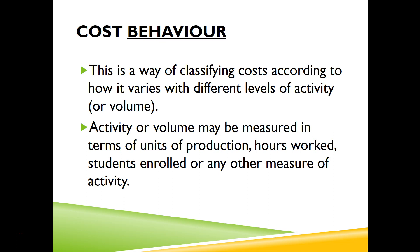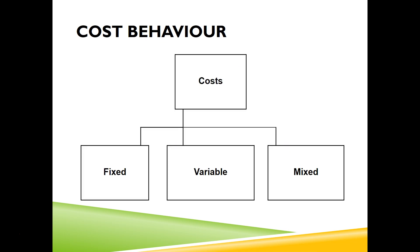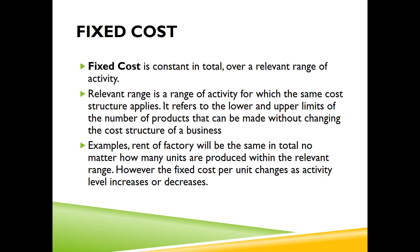Cost behaves in different ways, and this is one way we can classify cost — according to its behavior, how it varies with different levels of activity or production volume. Activity or volume can be measured in terms of units of production, how many hours workers have worked, how many students have been enrolled, or any other measure of activity or volume. There are three behaviors based on this: fixed, variable, and mixed.